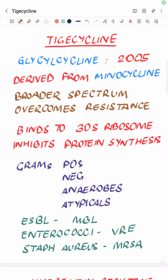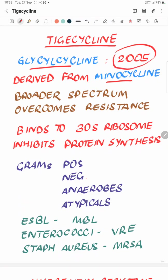Hello friends. Here we will be talking about the antibiotic TG-cycline. It's a class of its own — a glycylcycline derived from minocycline, which is a tetracycline, by a modification in its structure. It's the first in its group and approved for use since 2005, so it's a fairly new antibiotic.